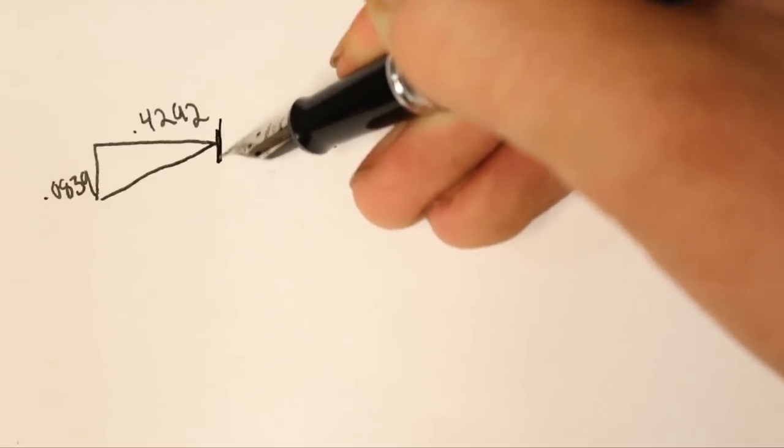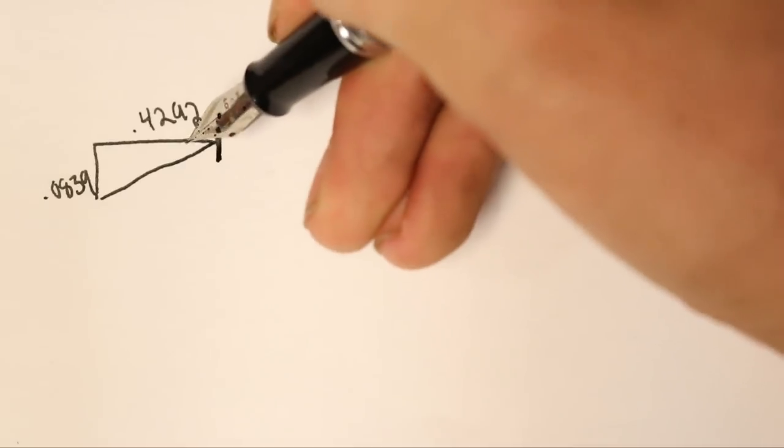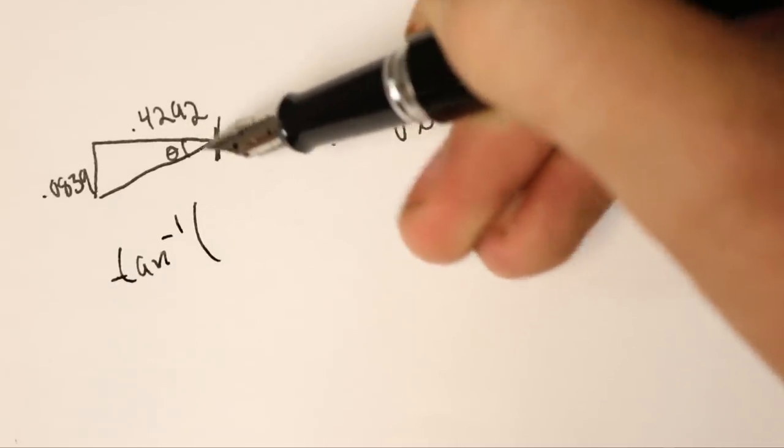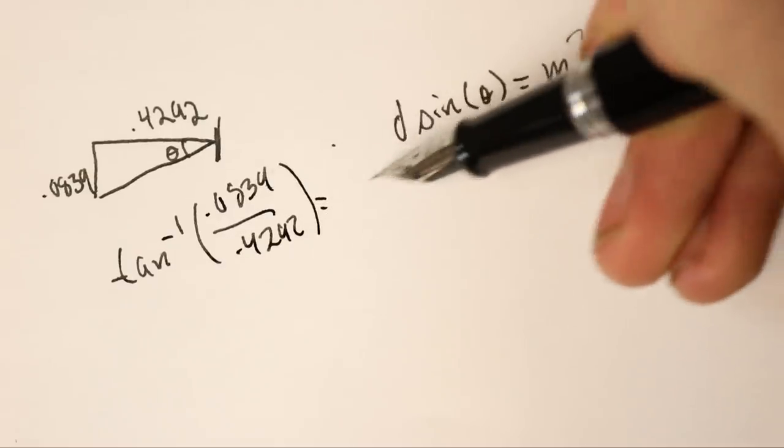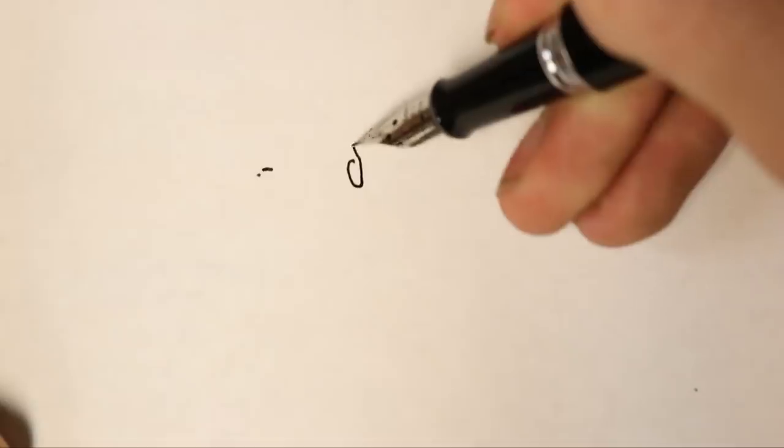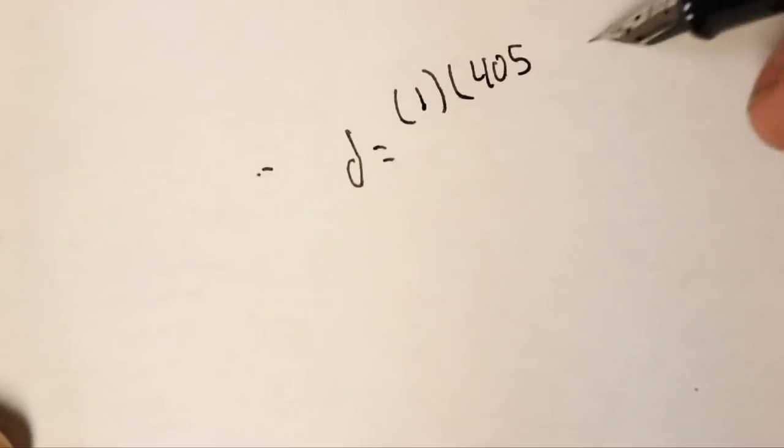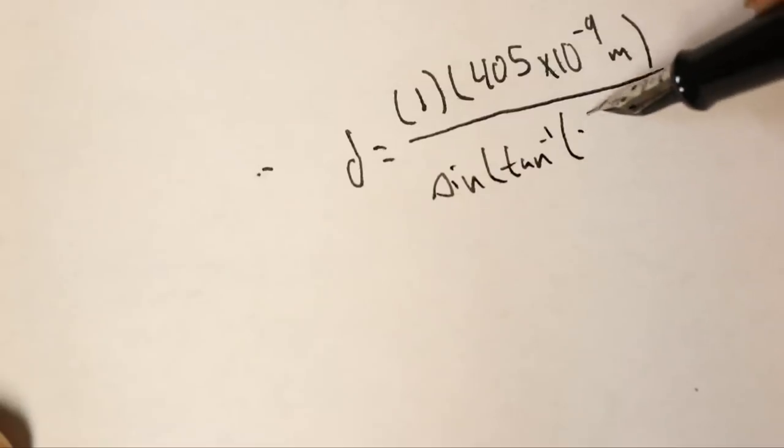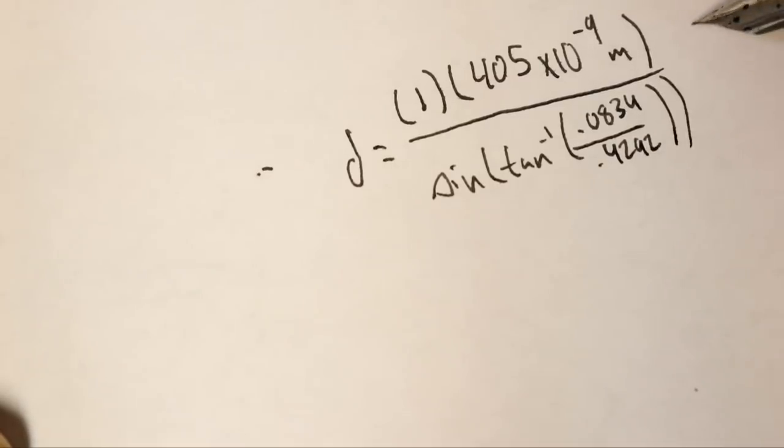So using this diagram, if we have our diffraction plate here, these are the distances in meters that we measured going out and down that the first integer diffraction was. And this angle right here is going to be our theta. So using trigonometry, we know that the inverse tangent of the opposite over the adjacent, which in this case is going to be 0.0839 over 0.4292 is going to be equal to theta. So now plugging all these values into our equation, we find that the distance between the slits is equal to the diffraction fringe, which in this case was 1 away from the primary node, times the wavelength of the light, which is 405 nanometers, which is 405 times 10 to the negative 9th meters. And that needs to be divided by the sine of theta, which for us is the sine of the inverse tangent of 0.0834 divided by 0.4292.